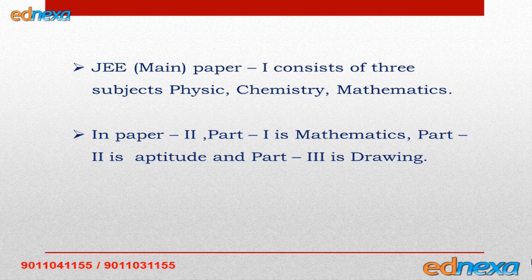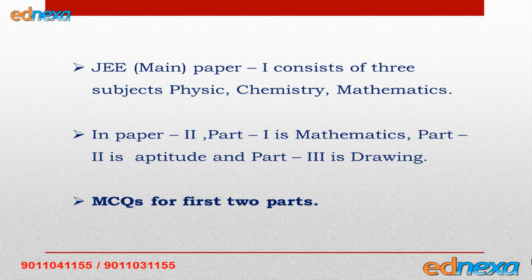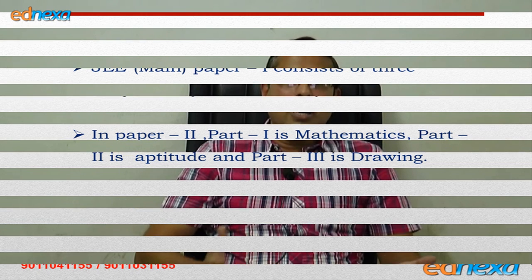For JEE Main paper two, which is given by students who want to do architecture: in part one mathematics is there, in part two aptitude will be judged, and in part three there is a drawing test. For the first two parts MCQs will be there, but for the drawing part there will be no MCQs.